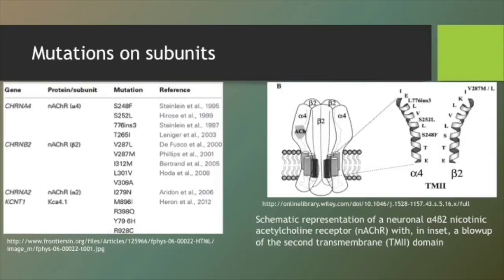I mentioned previously that the nicotinic acetylcholine receptor has four different transmembrane regions, and the picture on the right is a blown-up image of the second transmembrane region showing the locations of each of the mutations on the alpha 4 and beta 2 subunits.